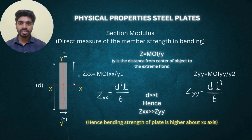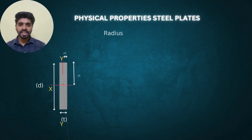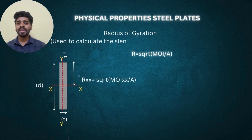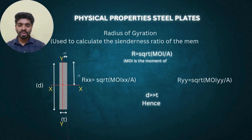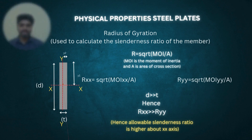The next property is radius of gyration. I will explain the actual meaning in another short video, but for now understand that radius of gyration equals √(I/A), and it is used in calculating the slenderness ratio.